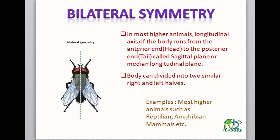Bilateral symmetry — normally after Platyhelminthes, from annelids onward, maximum invertebrates and higher order vertebrates — mammals, amphibia, reptilia, fish — all have bilateral symmetry. Bilateral symmetry means: the axis running from anterior to posterior, which passes through the dorsal-ventral surface, is the axis along which we divide the animal. The plane along this axis is called the sagittal plane. If we divide the animal through the sagittal plane, we get two equal halves which are mirror images of each other — this is called bilateral symmetry. Bi-radial symmetry means both bilateral symmetry and radial symmetry are present in the same body.